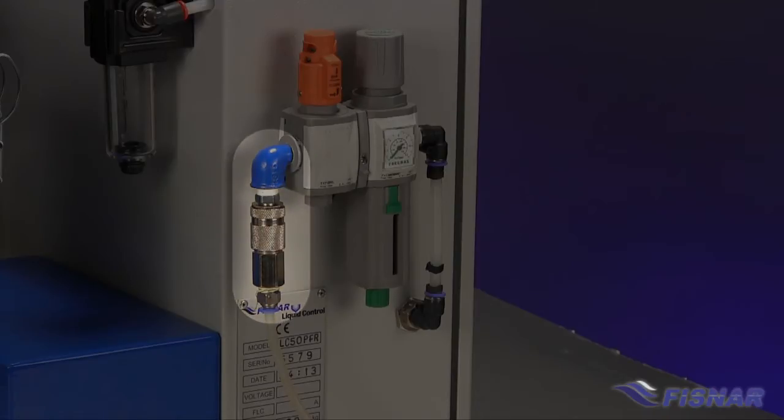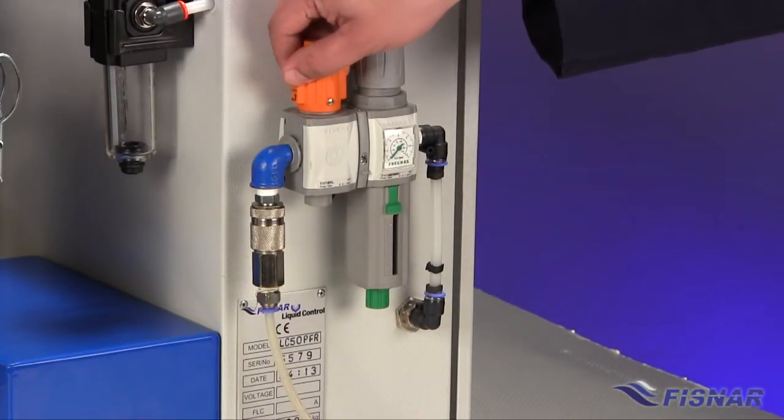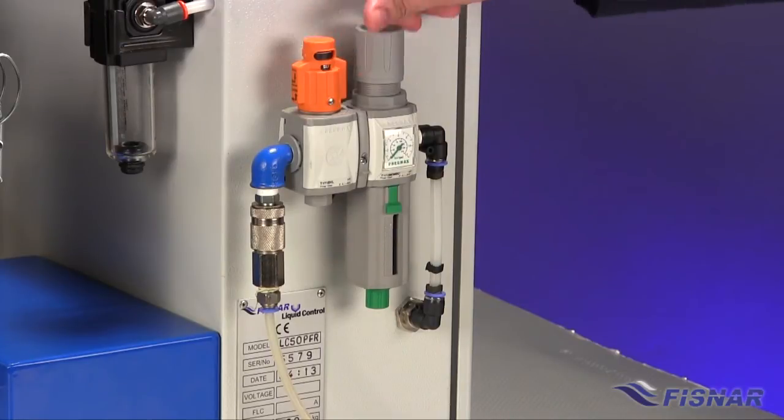Once air is connected, locate the main air isolator switch and air pressure regulator. Turn on the main air isolator switch and set the pressure gauge to 80 PSI.